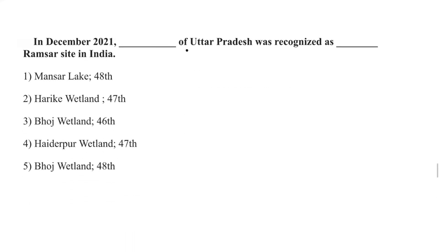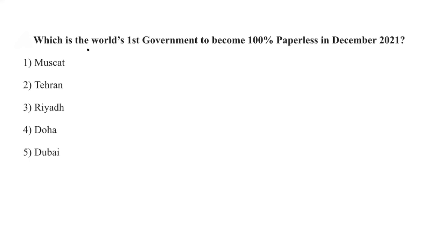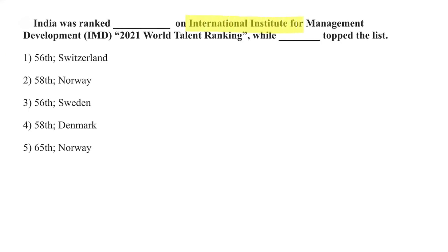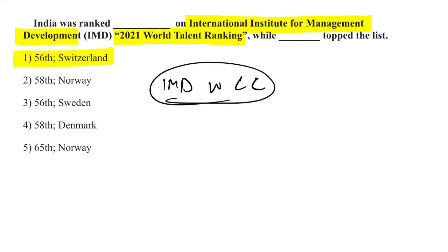Haiderpur Wetland of Uttar Pradesh was recognized as the 47th Ramsar Site in India. Dubai became the world's first government to go 100% paperless from December 2021. India ranked 56th on the IMD World Competitiveness Center's 2021 World Talent Ranking, while Switzerland topped the list.